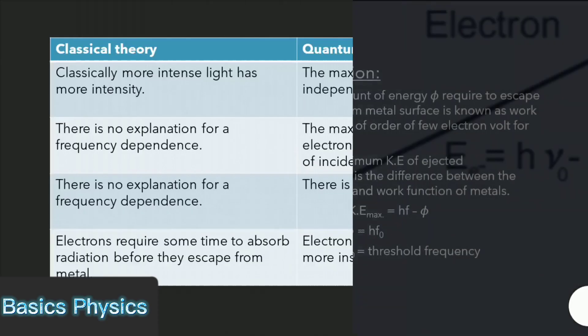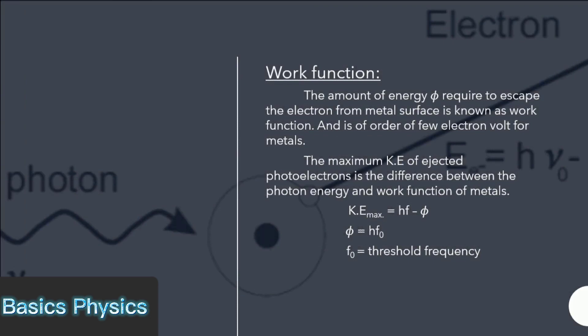The amount of energy required to escape the electron from metal surface is known as work function and is of order of few electron volts for metals. The maximum kinetic energy of ejected photoelectrons is the difference between the photon energy and work function of metals. Maximum kinetic energy equals hf minus work function, where work function φ equals hf₀, where f₀ is the threshold frequency. Thanks for watching us.